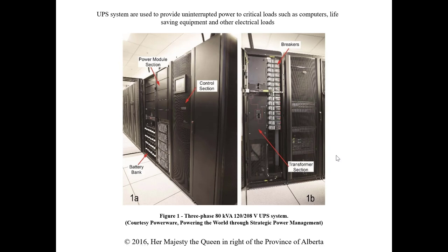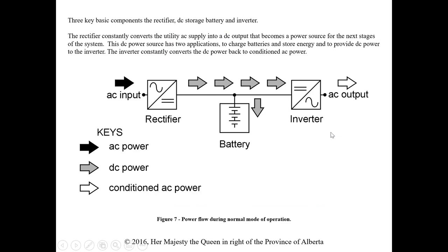Here is an example of a large UPS system. If you're only used to seeing a simple computer backup, it's just something you plug into the wall, but the one in the college would be significantly larger. We have breakers, a transformer section, a power section, a battery bank, and a control section. The operation of a UPS has three components: the rectifier, the battery, and the inverter section.